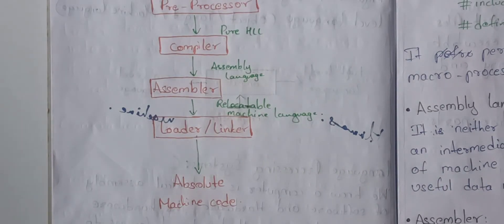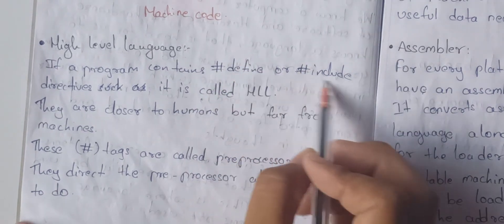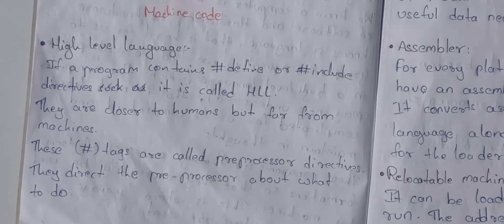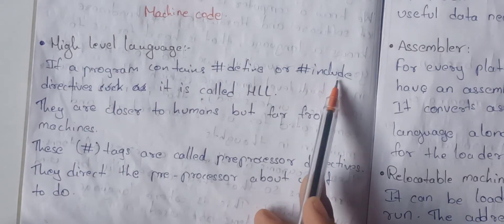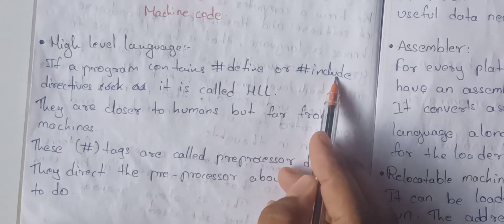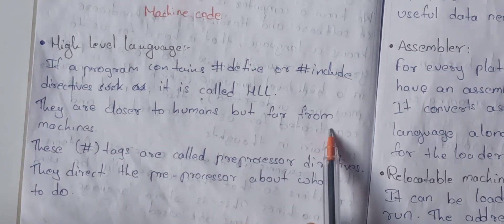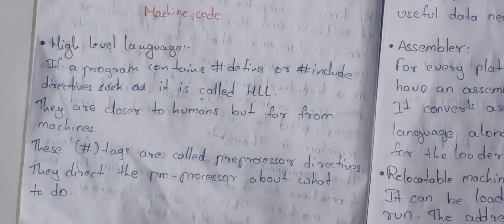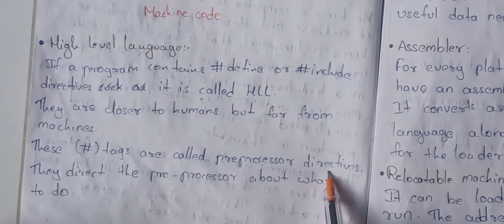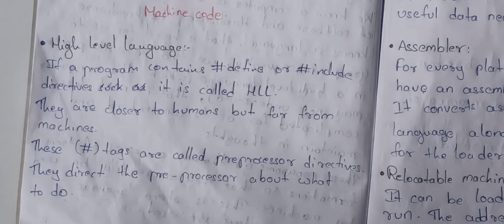Now let's take a step-by-step explanation for each phase. The first phase involves a high level language and a preprocessor. What is high level language? If a program contains hash define and hash include directives — for example, hash include stdio.h — we call it a high level language. These hashtags are called preprocessor directives; they direct the preprocessor about what to do. High level language is closer to humans but far from machines.